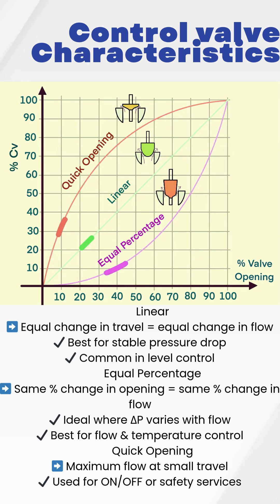There are three main characteristics. Linear characteristic gives equal flow change for equal valve travel. It works best for level control and systems with stable pressure drop.